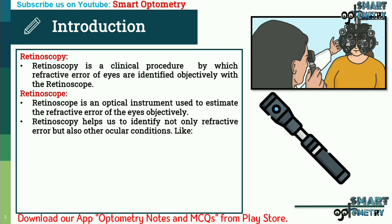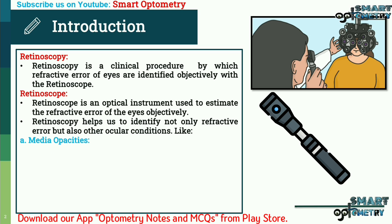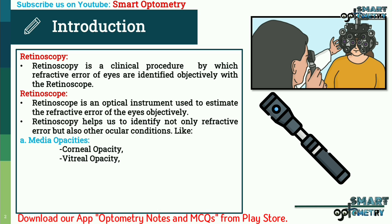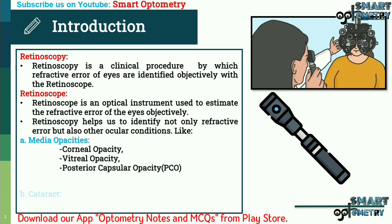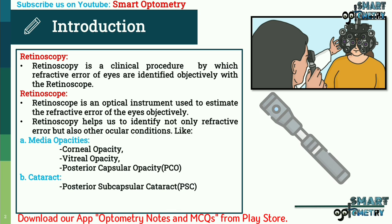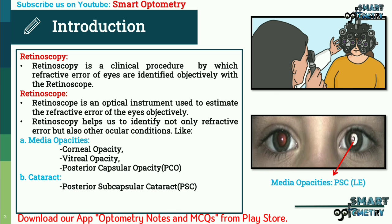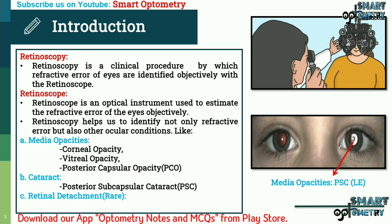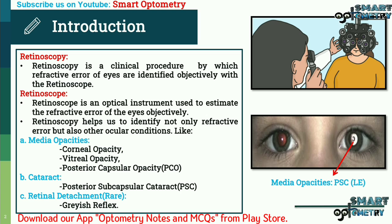Retinoscopy helps us identify not only refractive error but also other ocular conditions like media opacities, corneal opacity, vitreous opacity, posterior capsular opacity, and cataract. Posterior capsular cataract can easily be seen with a retinoscope. In retinal detachment, though rare, the reddish reflex of the fundus becomes grayish.